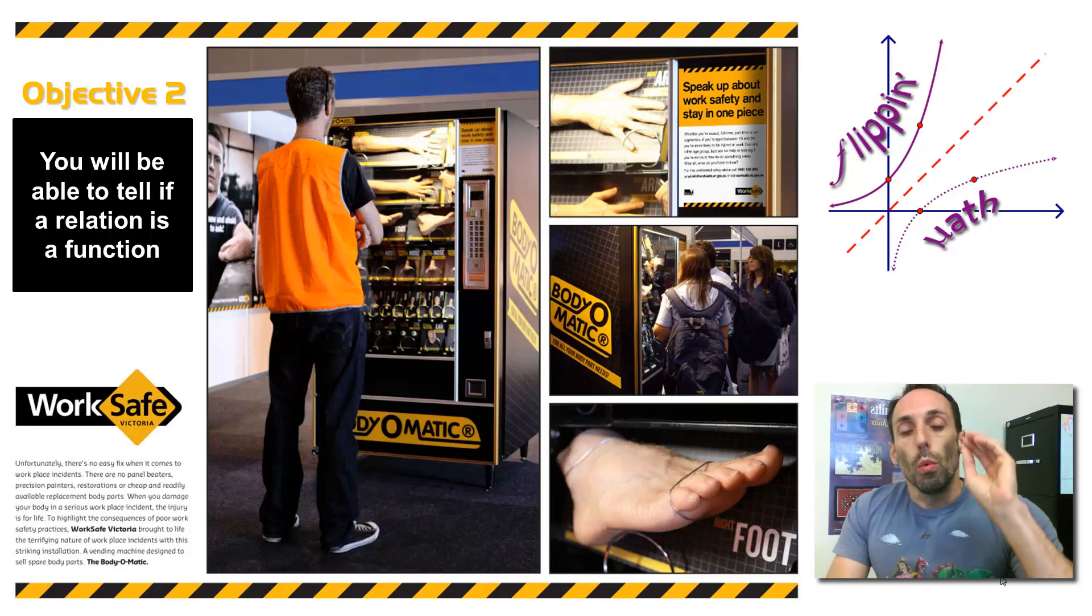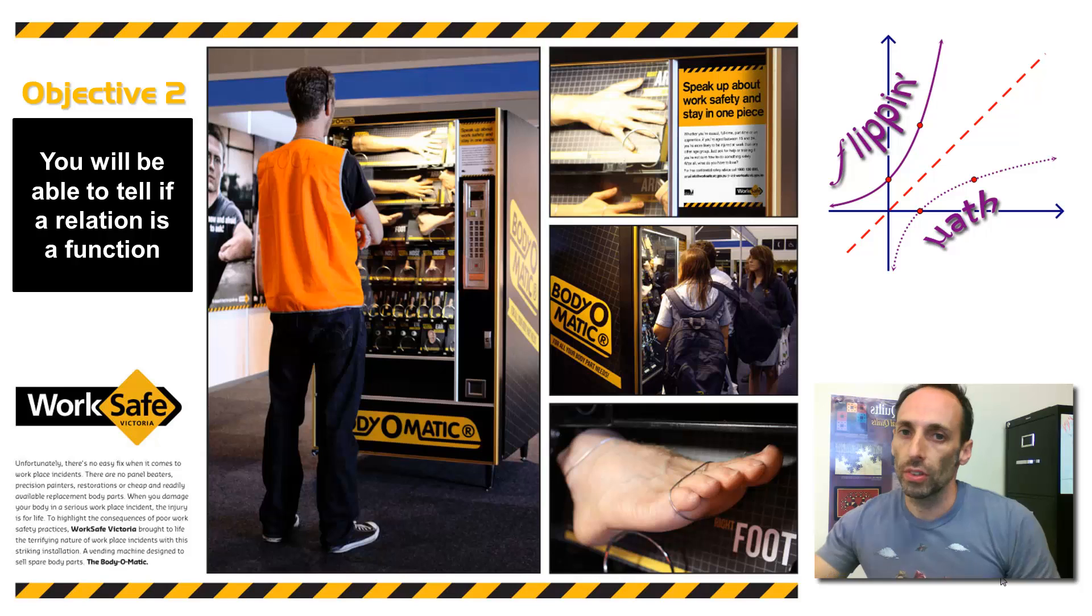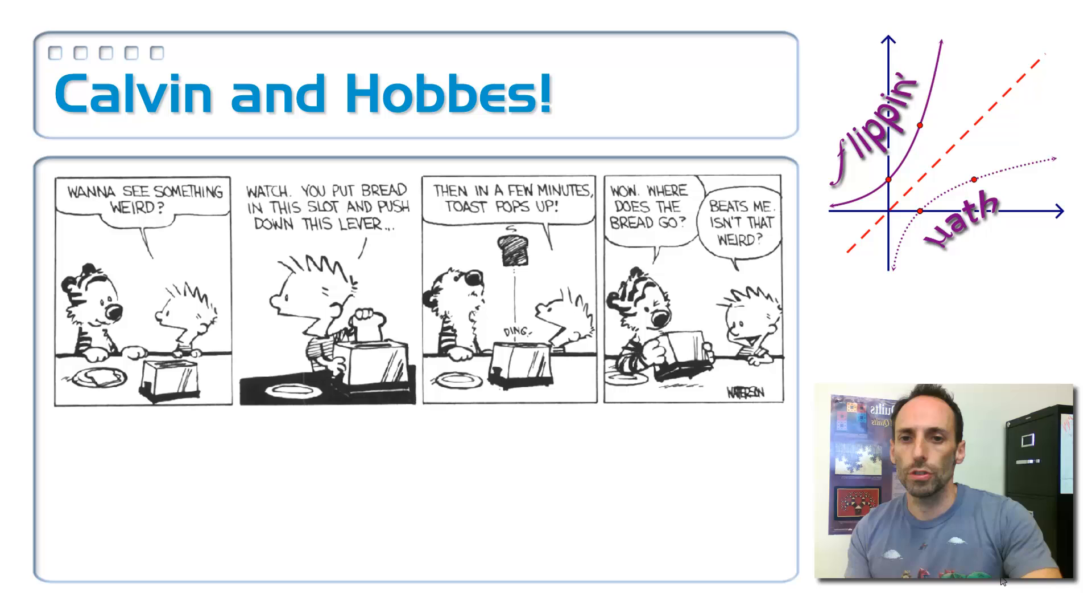The point is that whenever you select one input, there's only one possible output that could come out. When I select thumb, left thumb, a thumb doesn't come out. This is the general idea for a function.